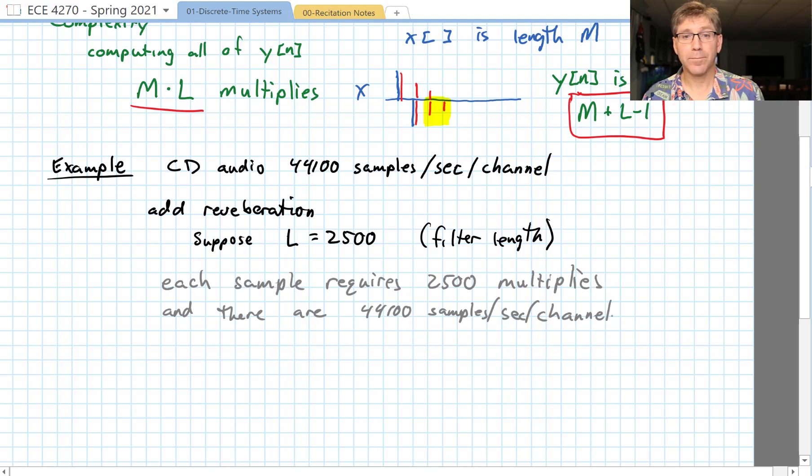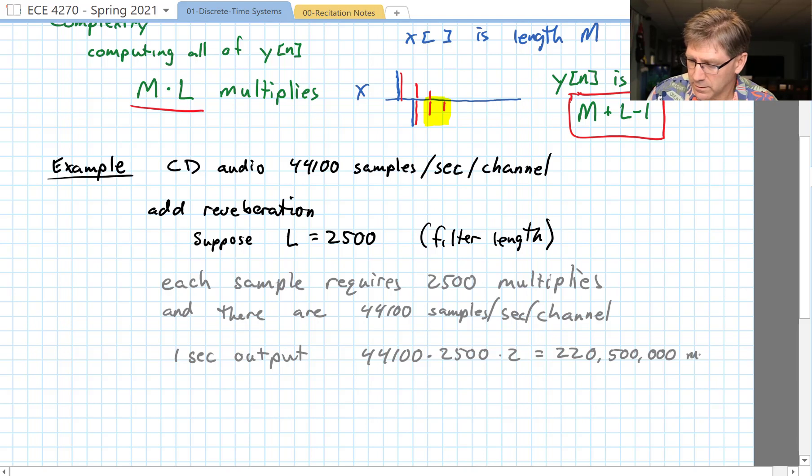And there are 44,100 samples per second per channel. So for one second of output audio we have 44,100 times 2500 multiplies times 2, and that comes out to a huge number, 220 million 500,000 multiplies per second.